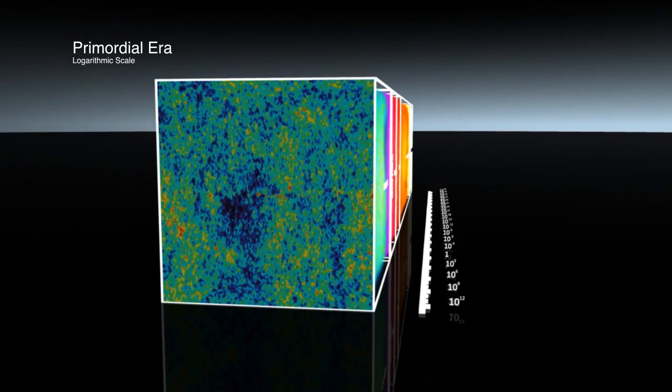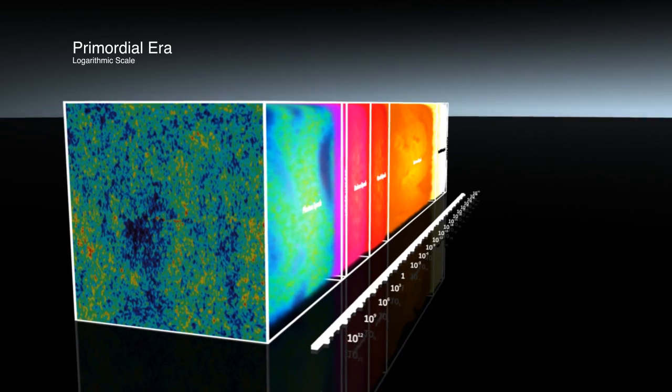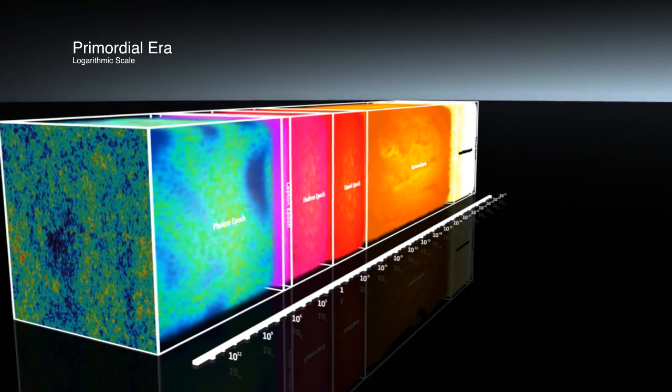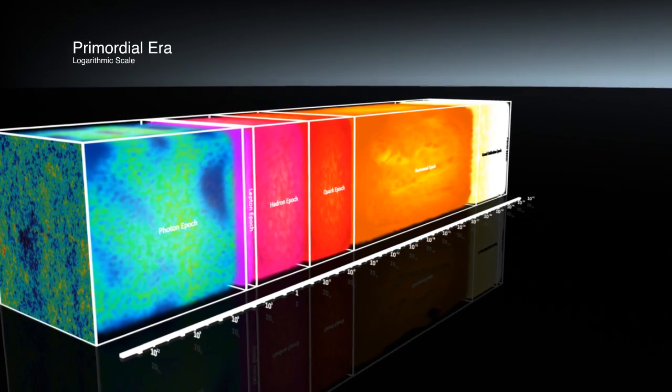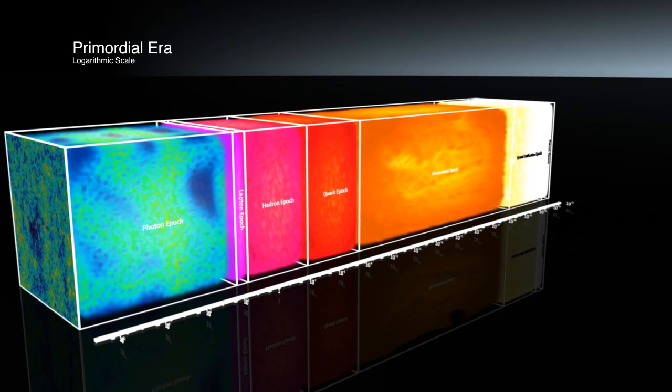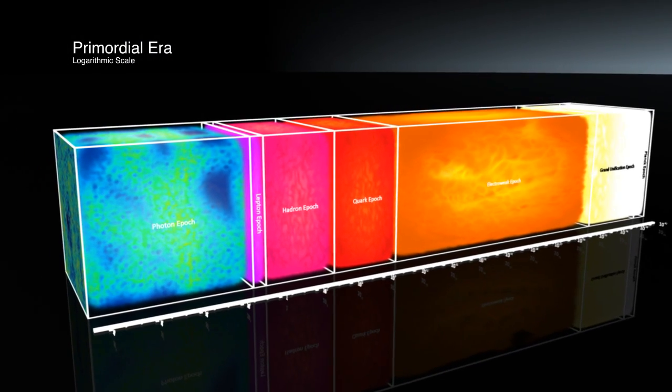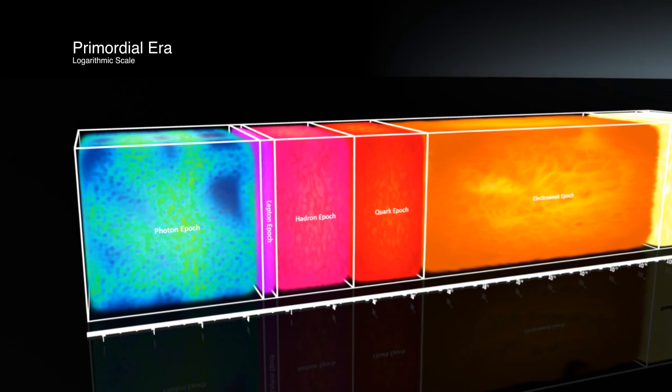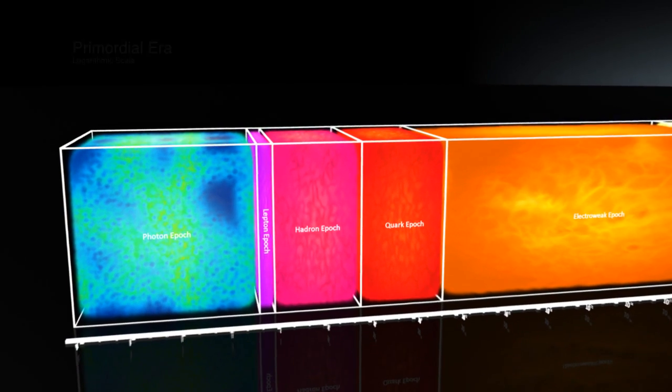The conditions of the early universe were of extreme heat and energy which led to the creation of strange forms of matter and physics. For decades, particle physicists have been recreating these early conditions with particle accelerators, smashing particles together to create similar levels of heat and energy.